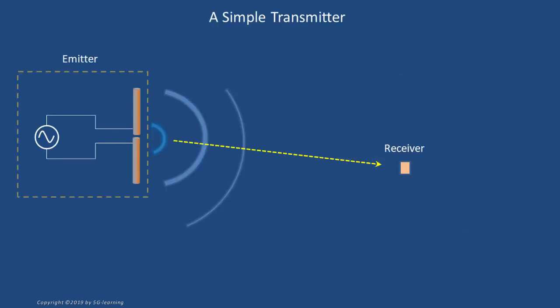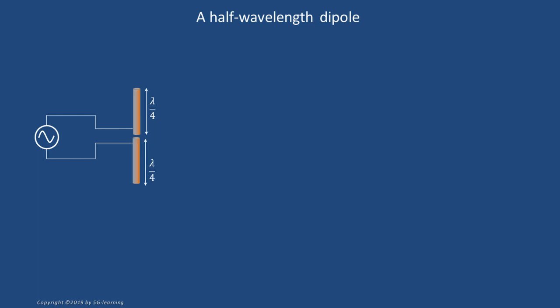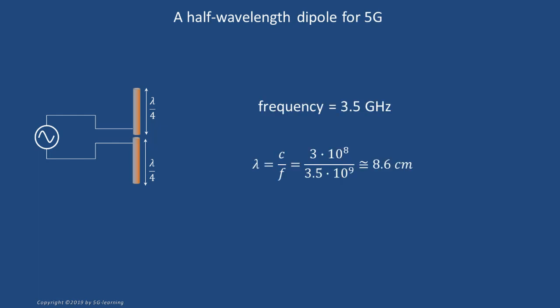A very simple transmitter may be represented by a sinusoidal oscillator connected to a couple of collinear conductive rods. Linked to a suitable modulator, this elementary transmitter is able to send messages to a remote receiver. The simple antenna is called a dipole. To be efficient, our antenna should radiate most of the energy received from its source. A dipole fulfilling this requirement can be built using two quarter-wavelength rods. You may recall from a previous video that 5G networks may operate at centimeter or millimeter waves. At 3.5 GHz, for example, the wavelength is 8.6 centimeters.